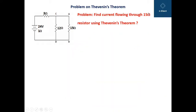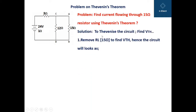We will now see an example to further clarify Thevenin's theorem. A battery of 24 volts with internal resistance 1 ohm is given with resistance values. We need to calculate the current flowing through the 15 ohm resistor, which we consider as the load resistance RL.